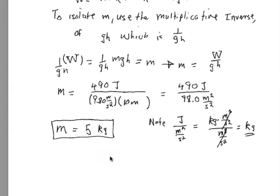So then you put in the numbers here. The mass then is 490 joules divided by 9.80 meters per second squared times 10 meters, and you get 490 joules and 98.0 meters squared per second squared. The mass, the numbers give you a 5. The units then, a joule per meter per second squared is effectively a kilogram meter squared per second squared, meter per second squared. They all cancel, leave just a kilogram. So the mass in this case is 5 kilograms.